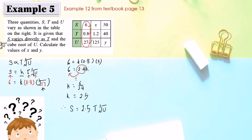Using the equation S equals 2.5 T cube root of U, when T equals 1.2 and U equals 125: substitute the values to get S equals 2.5 times 1.2 times cube root of 125. Cube root of 125 is 5, so S equals 2.5 times 1.2 times 5, giving S equals 15.